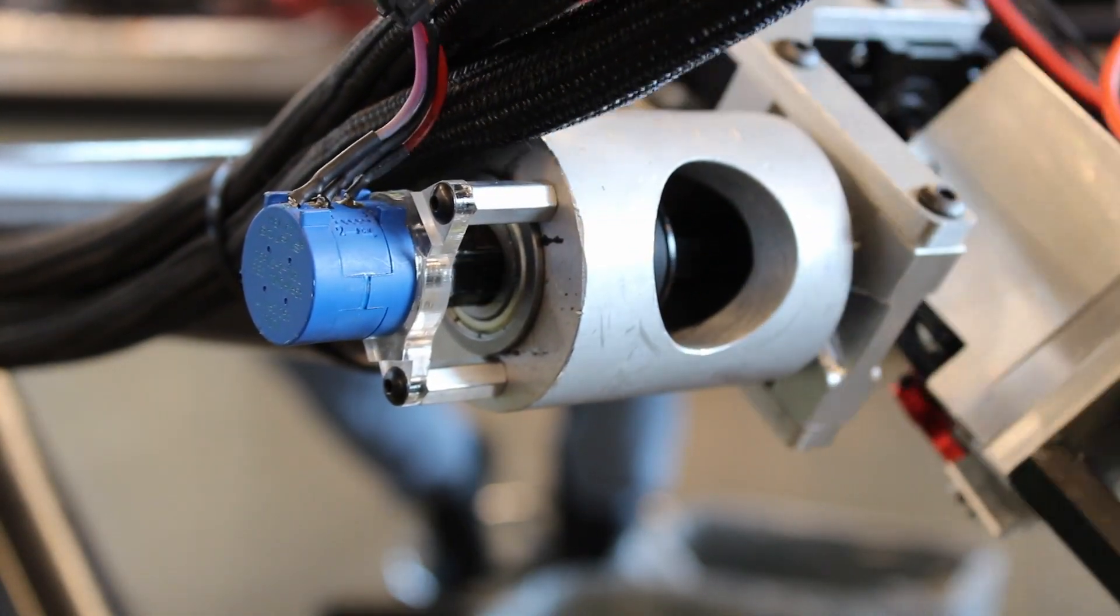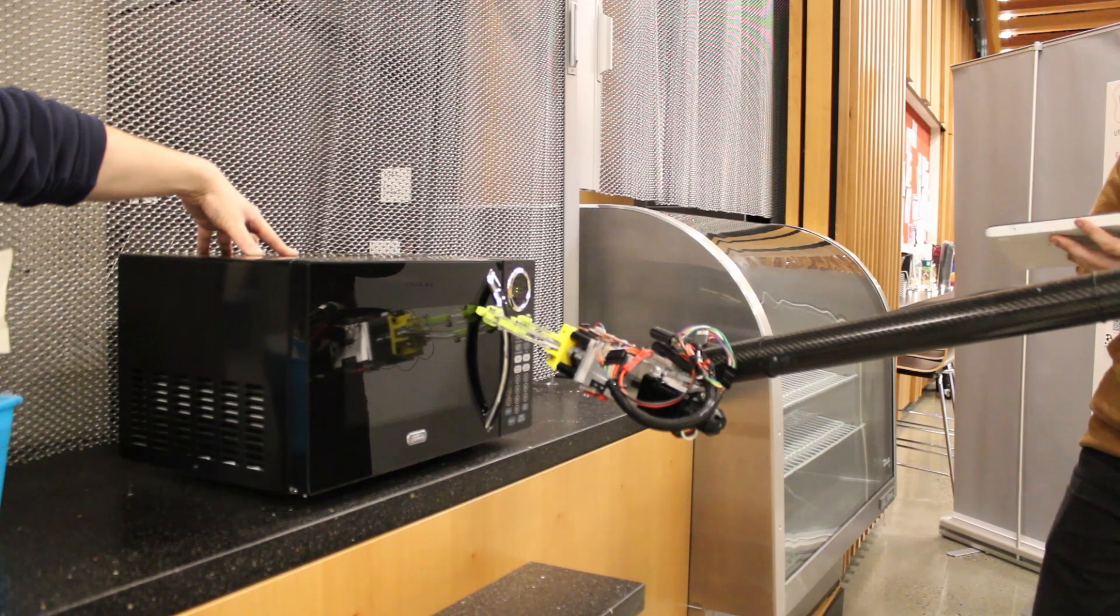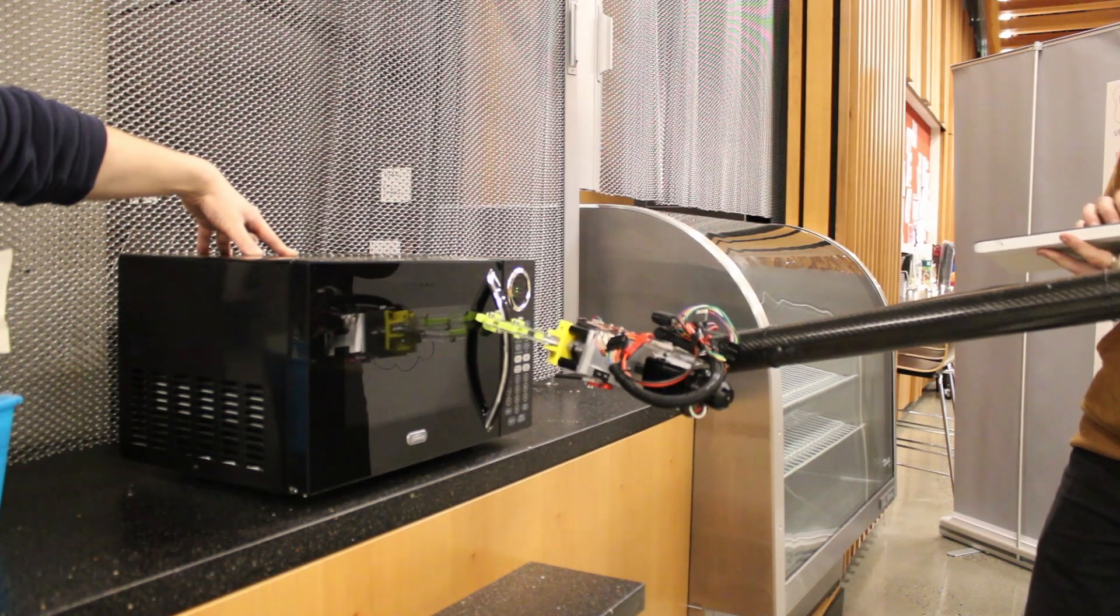The arm is equipped with absolute position encoders on every axis to aid in the inverse kinematic model. The inverse kinematic model and PID allows for easy natural movement of the arm.